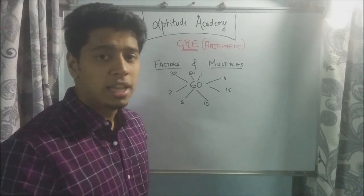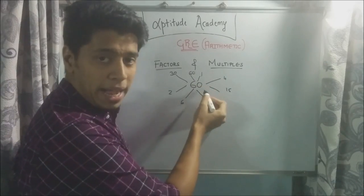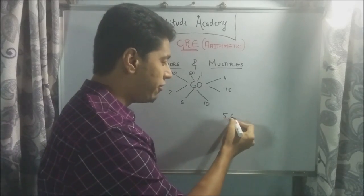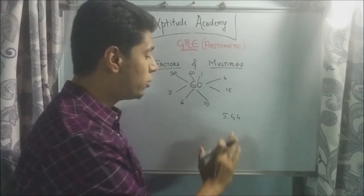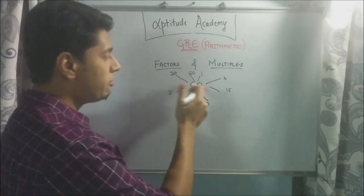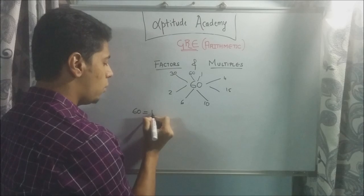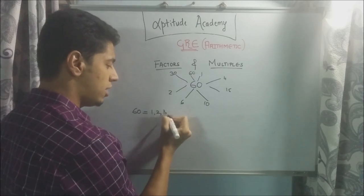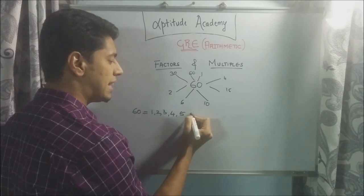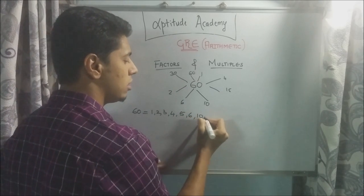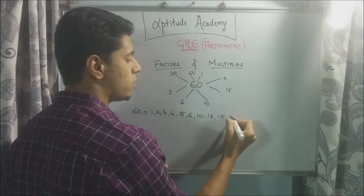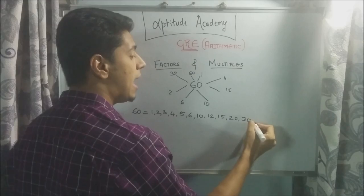So factors are basically integers which when you divide this by, you will get a whole number. You're not going to get any remainders, you're not going to get any ugly numbers like 5.44, nothing of that sort. You're only going to get a perfect integer. Now, if we list out the factors for 60, you will get one, two, three, four, five, six, 10, 12, 15, 20, 30, and you get 60.